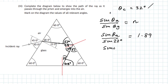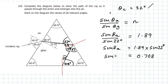Cross-multiplying: sin(theta air) equals 1.89 multiplied by sin(22°), which gives an answer of 0.708. So sin(theta air) equals 0.708. Take the inverse sine — make sure your calculator is on degrees — and theta in the air comes out to be 45 degrees. So this ray of light is going to leave at an angle of 45 degrees. You can see the incident ray comes in, is refracted, is internally reflected, and is refracted back out — almost going in the opposite direction.